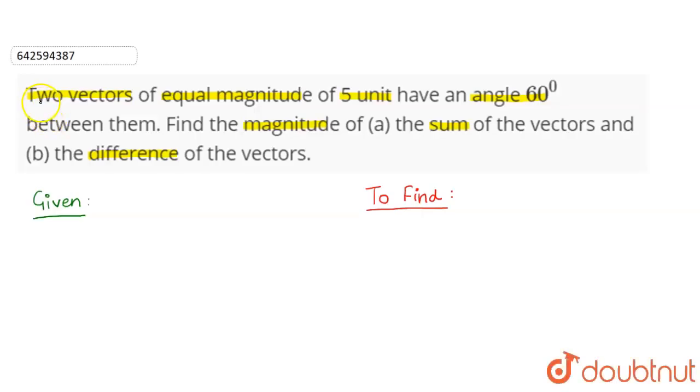Hi, the question is: two vectors of equal magnitude of 5 units have an angle 60 degrees between them. Find the magnitude of the sum of the vectors and the difference of the vectors.